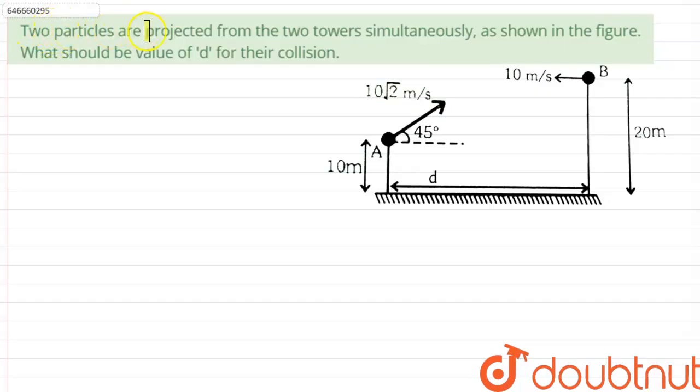Hello everyone. Two particles are projected from two towers simultaneously as shown in the figure. What should be the value of D for their collision?